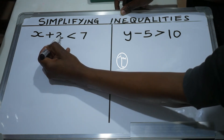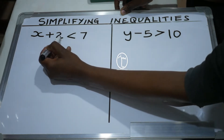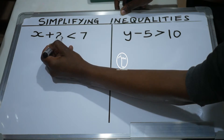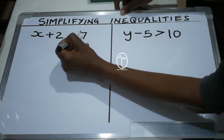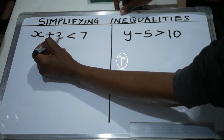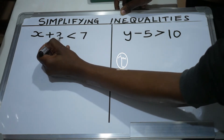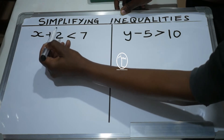The first thing we do is collect the like terms together. In this question, 2 and 7 are the like terms — they don't have any letter. When collecting like terms, we move the smaller number to where the bigger number is. Here, 2 is the smaller number. Before moving it, we check the sign on the left side of the number. Since 2 is a positive number, when it moves to the other side, the sign changes from plus to minus.